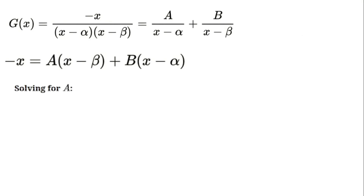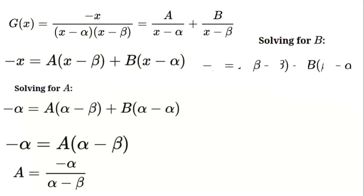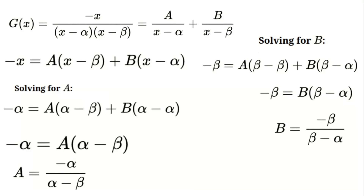Now we'll solve for A and B by plugging in specific values for x. First, let's set x = alpha. This simplifies to -alpha = A·(alpha - beta), since the B term vanishes. Solving for A: A = -alpha / (alpha - beta). Next, set x = beta. This simplifies to -beta = B·(beta - alpha), since the A term vanishes. Solving for B: B = -beta / (beta - alpha). Since beta - alpha is the negative of alpha - beta, we can rewrite this as B = beta / (alpha - beta).